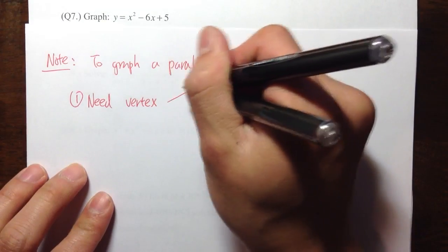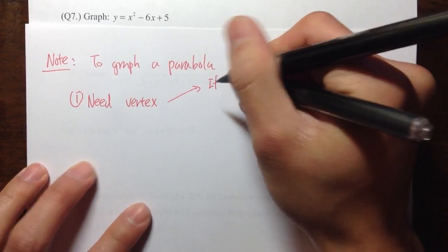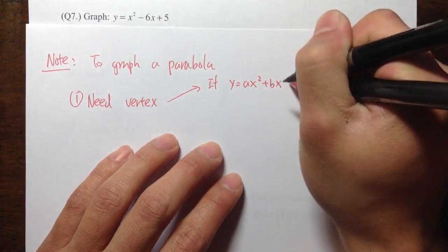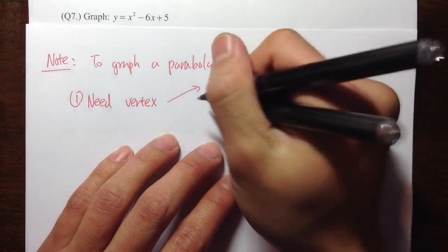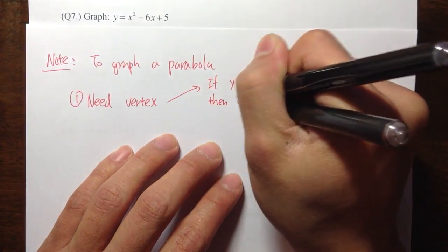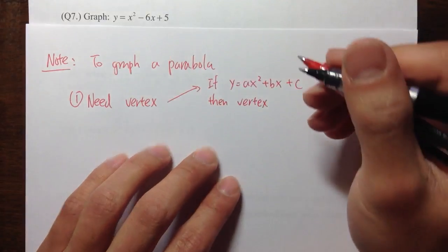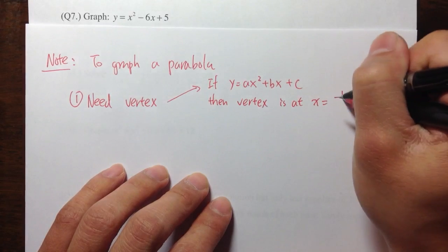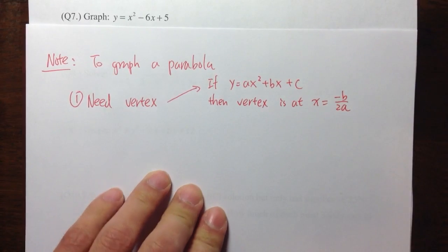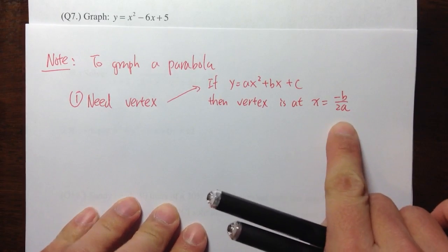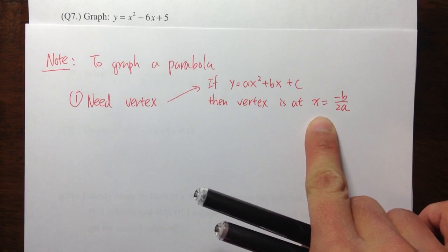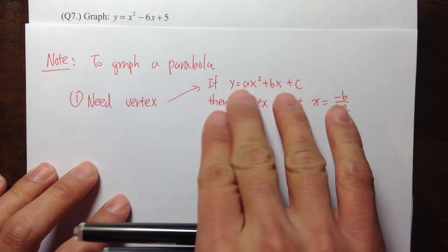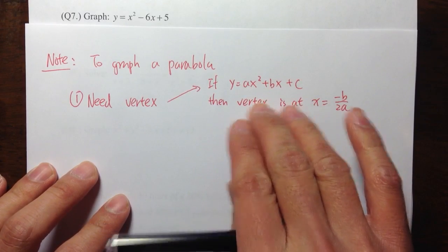We have two situations. If we have the equation in the form of y is equal to ax squared plus bx plus c, then the vertex of this graph, the parabola, the vertex is at x is equal to negative b over 2a — the vertex formula. This formula helps us find the x value of the vertex. And then once we have the x, we can plug in to the original equation and find y.